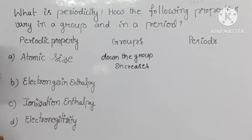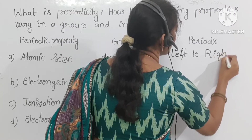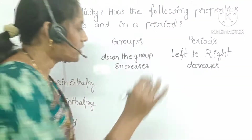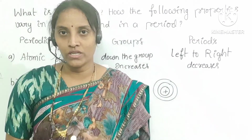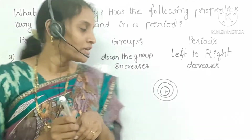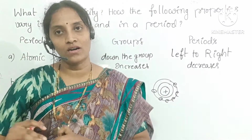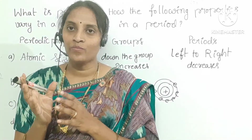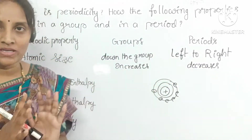Coming to periods — from left to right, atomic size decreases. The reason is that in a given period, all elements have the same shell number. The shell number does not increase, but atomic number increases by one unit. The newly coming electron enters into the same shell, so nuclear attraction towards the outer shell increases, and atomic size decreases from left to right.